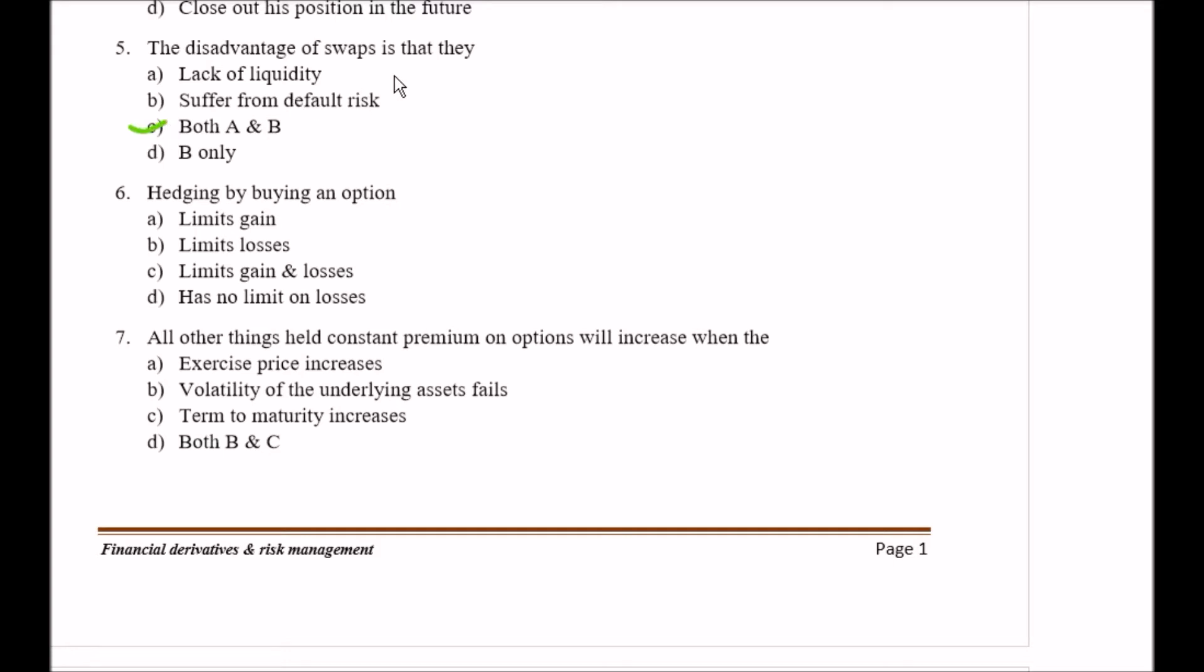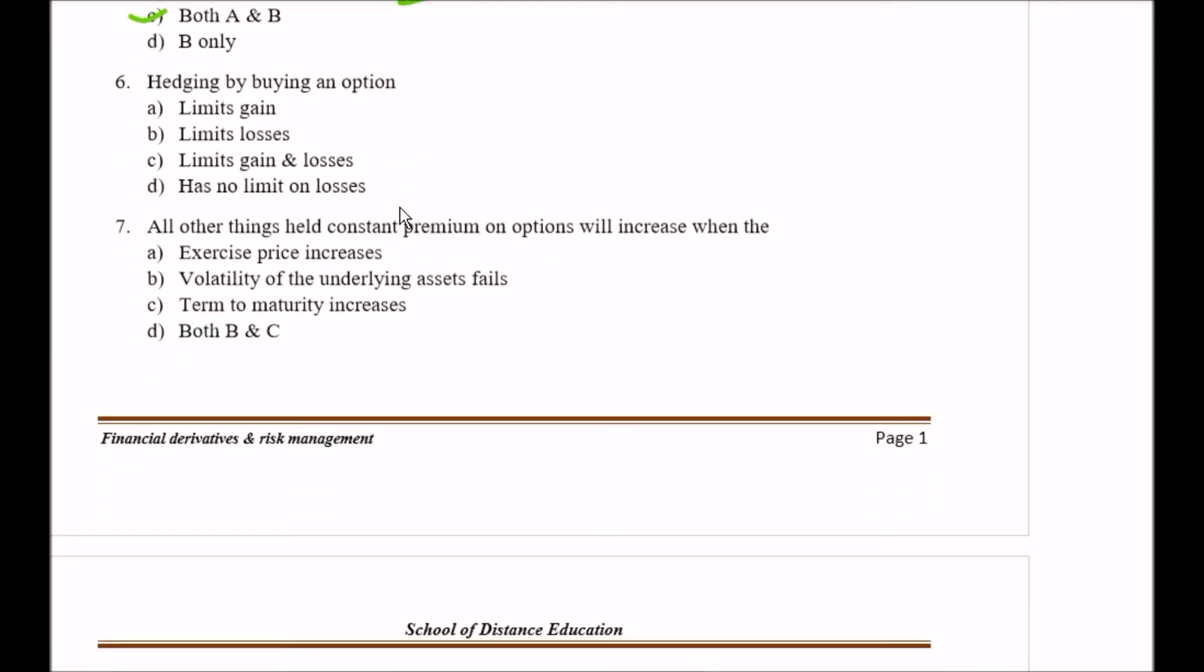Question six: Hedging by buying an option Option A limits gain, Option B limits losses, Option C limits gain and losses, Option D has no limit on losses. Here your right answer is Option B, that is limits losses.